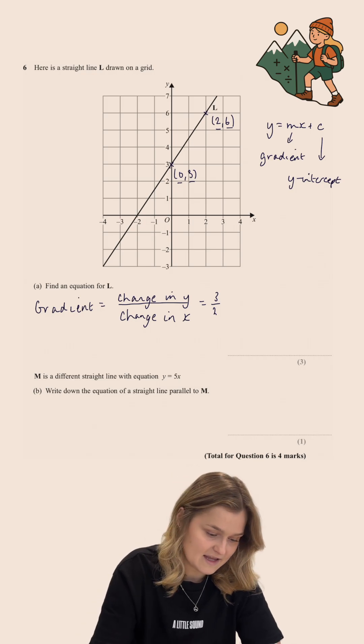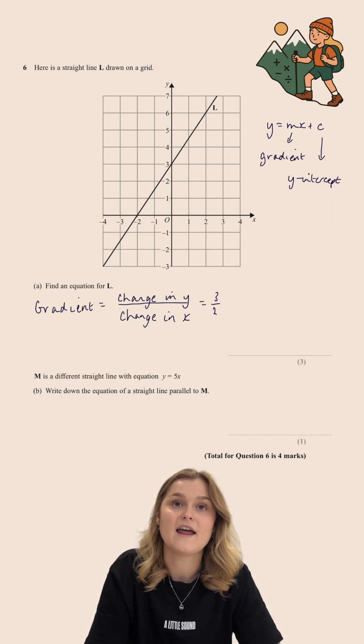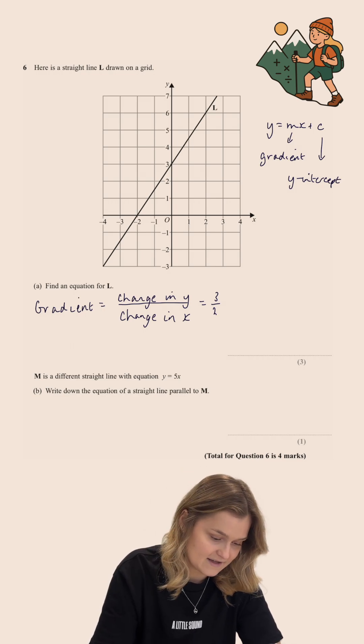Now, the Y-intercept is really easy for us to calculate. To find the Y-intercept, we just look at the line and look at where it crosses the Y-axis. The Y-axis is this axis here, and we can see that my line crosses just here at 3.